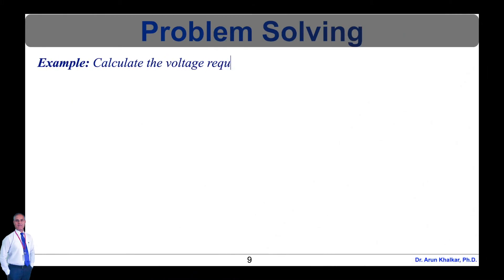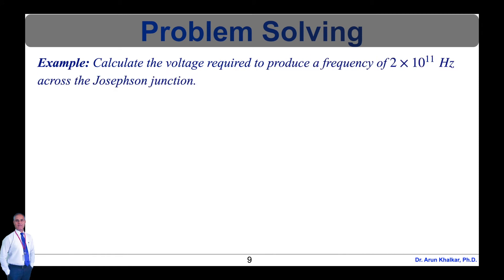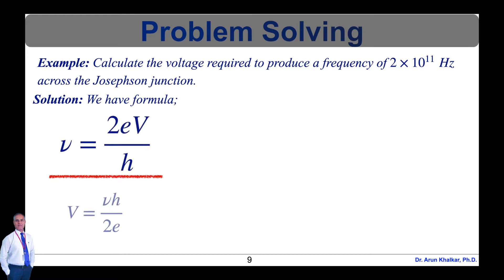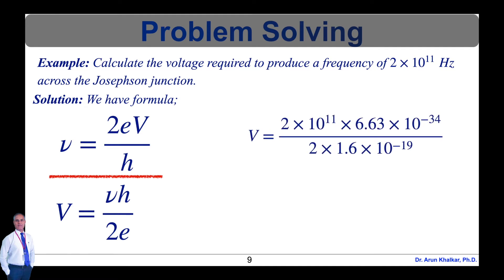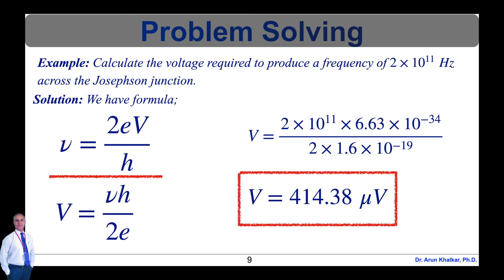Now let's see the next problem. Calculate the voltage required to produce a frequency of 2×10¹¹ Hz across the Josephson junction. Using ν = 2eV/h, rearranging: V = νh/(2e). Substituting values: V = (2×10¹¹ × 6.63×10⁻³⁴) / (2 × 1.6×10⁻¹⁹). After calculating, the voltage V = 414.38 micro volt. This is the voltage required to produce the frequency of 2×10¹¹ Hz across the Josephson junction.